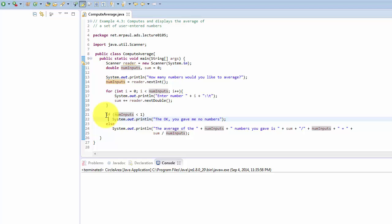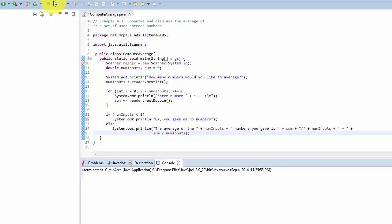We do that until our counter exceeds the number of inputs, and then we exit the loop. We check to see if the user said that they wanted to enter zero or a negative number of inputs. And if so, we say you gave me no numbers. I have a typo there. Otherwise, if the user entered a positive number of numbers, then we print the average. The average of the num inputs numbers you gave me is sum divided by num inputs. Let's run it and see if it goes.